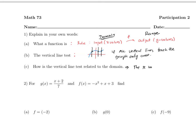The x values, or the domain, cannot repeat. If they repeat, then it will not pass the vertical line test. For example, if you have a graph that curves back, the x value has two different y values. Notice that it will not pass the vertical line test. That's the relationship between the domain and the vertical line test.